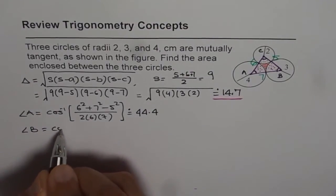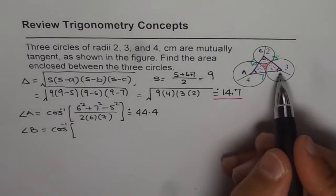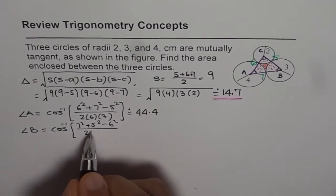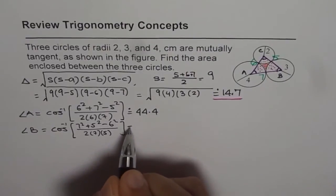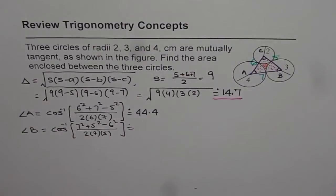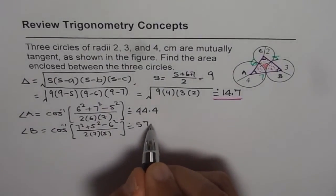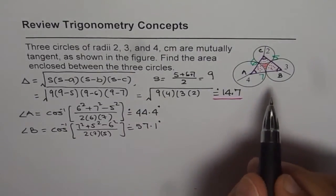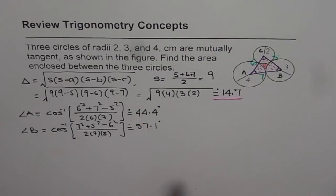Angle B for us will be cos inverse of B, so 7 square plus 5 square minus 6 square divided by 2 times 7 times 5. That gives us the value 57.12 or 57.1. So these are the degrees, angles in degrees for A and B. Some of you can find the angles in radians and use another formula, but we will do it in degrees.